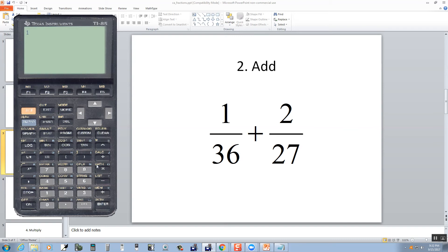So I'm going to do 1 divided by 36 plus 2 divided by 27. Press enter. We get a decimal. Again, I'm going to do my second, and then the multiplication for the math.